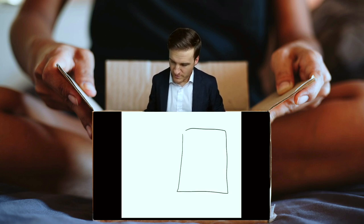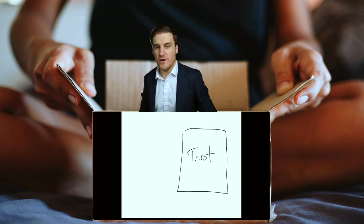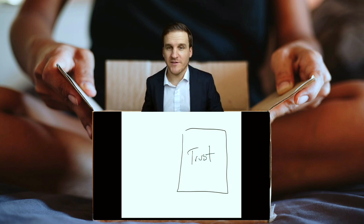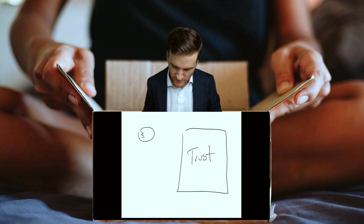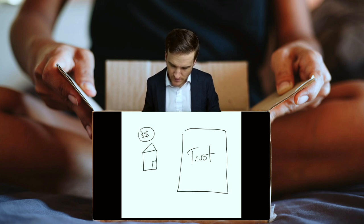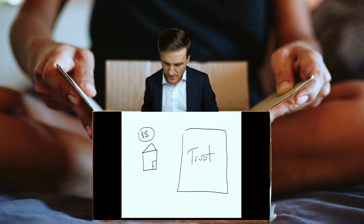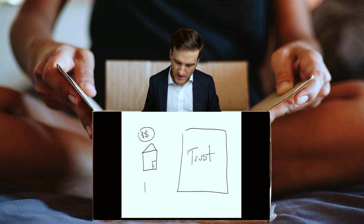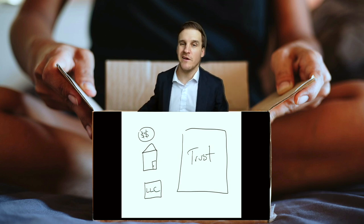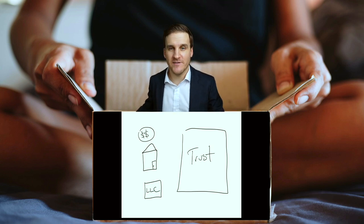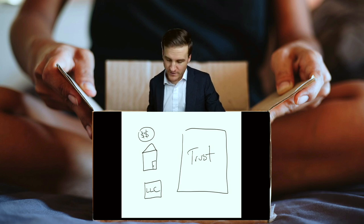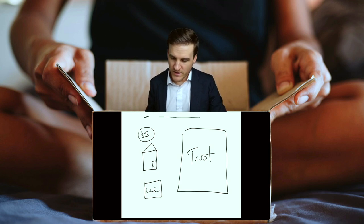Here's your box that represents your trust. Let's keep things simple — just a few assets. We'll call this a brokerage account. Say you've got your house that you want to make sure is protected from any lawsuits or creditors. And then maybe you also have an LLC, with a rental property or something like that inside that LLC. So how do they get from here over to the trust?